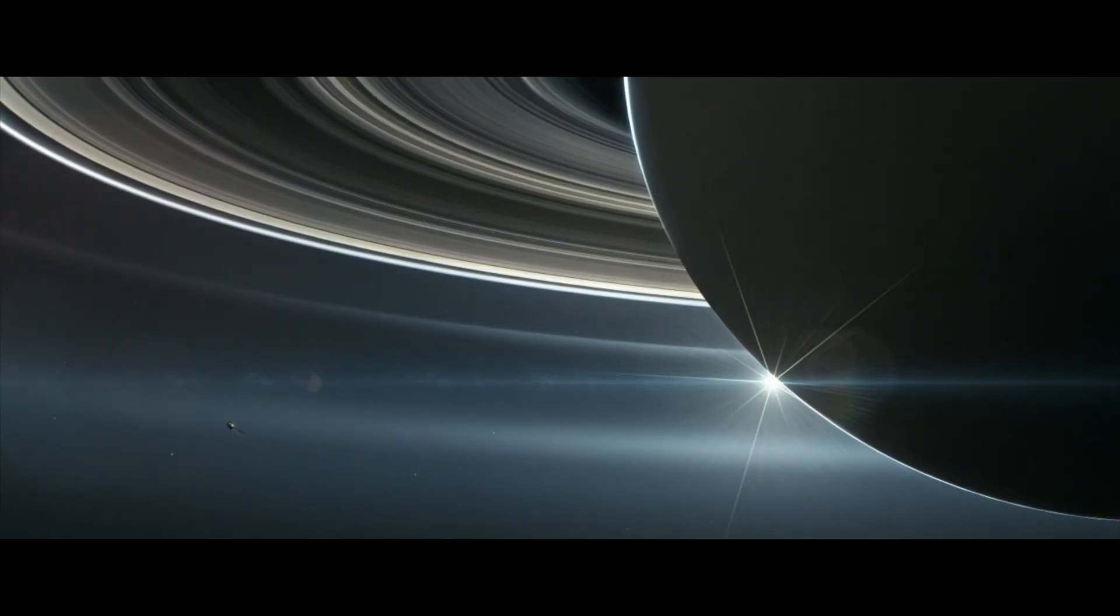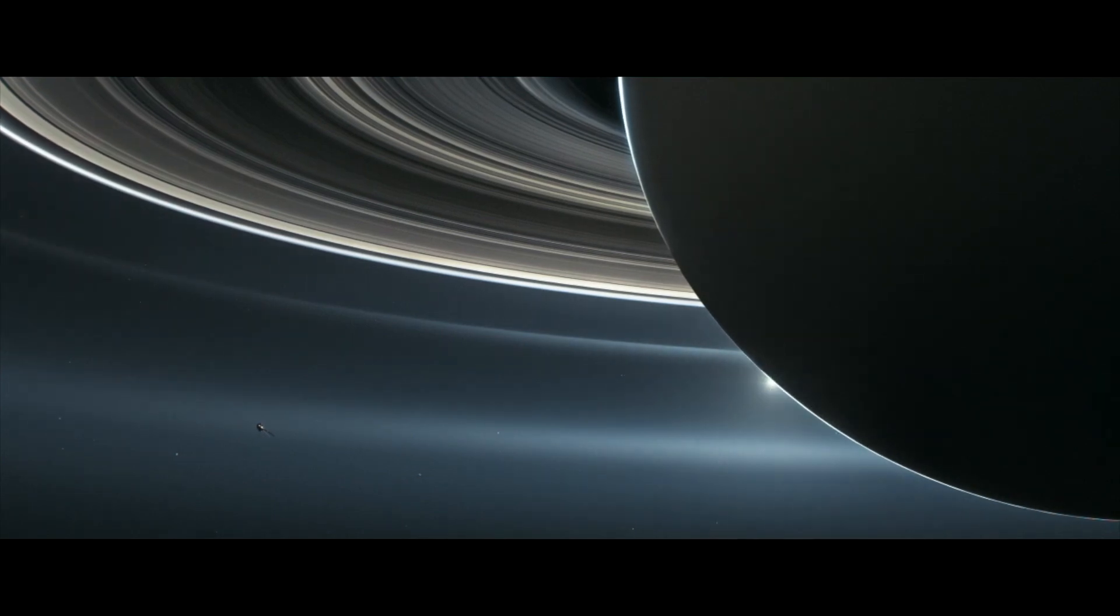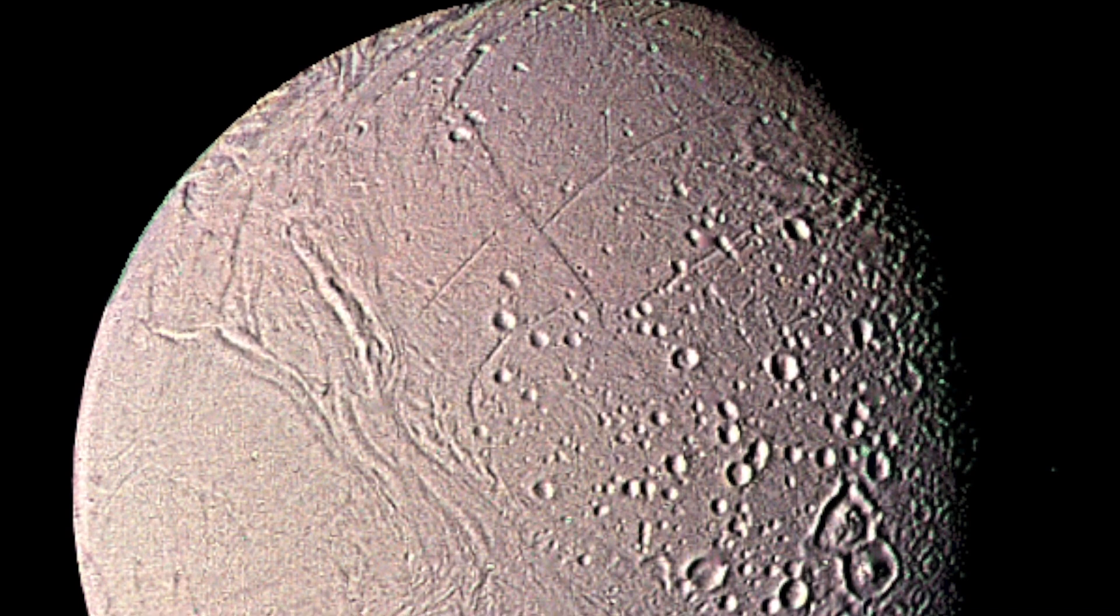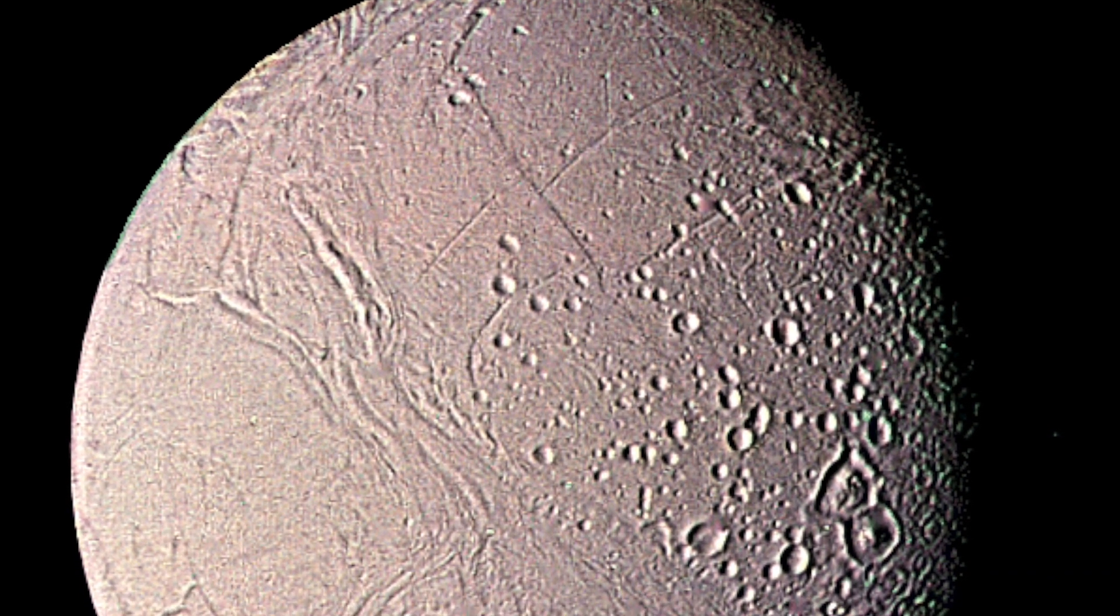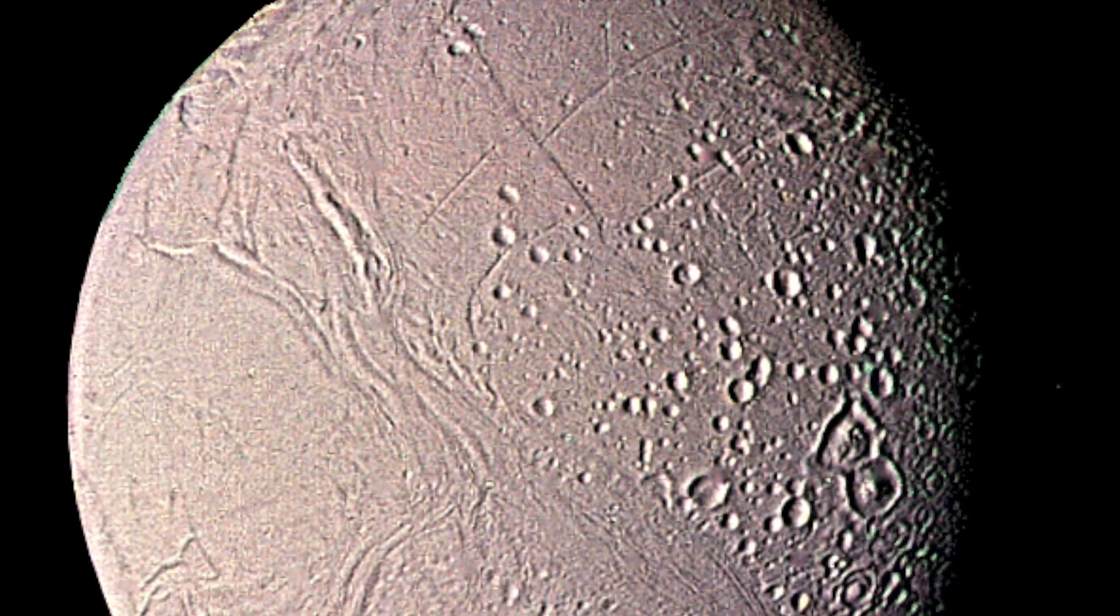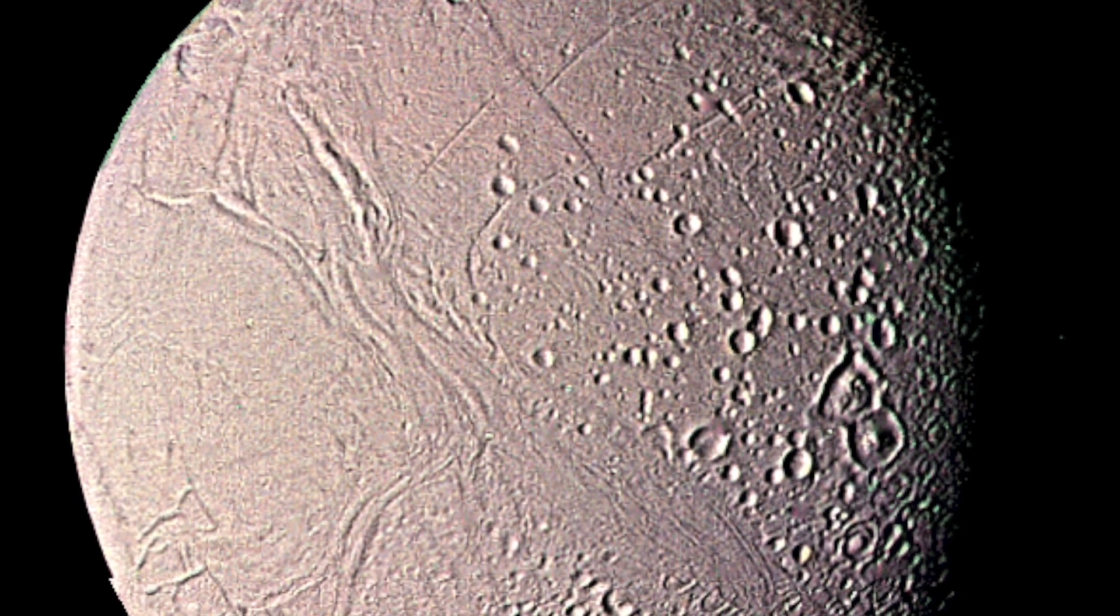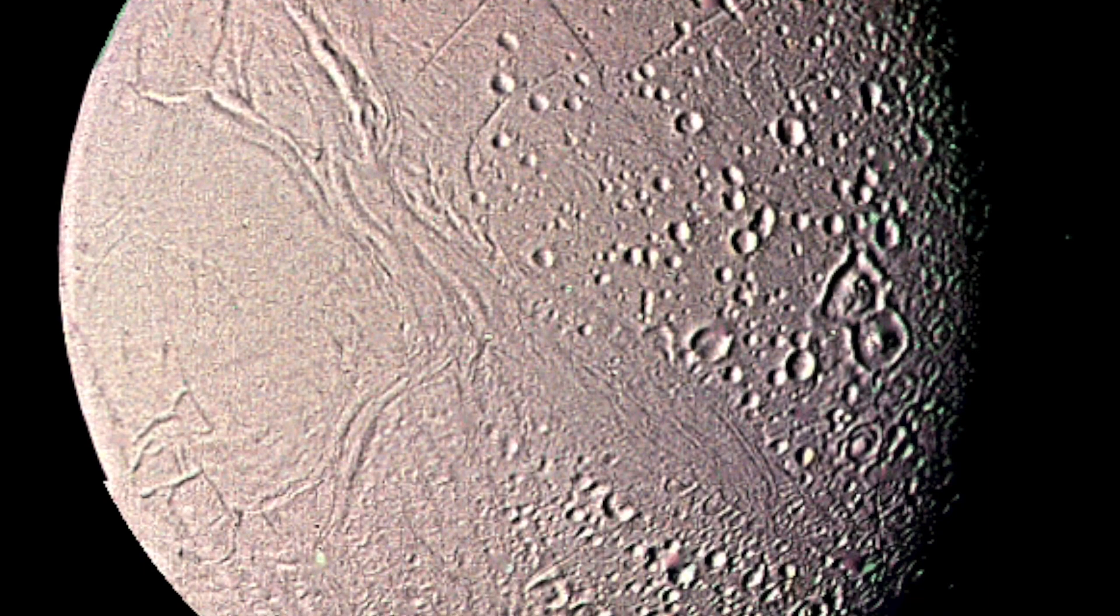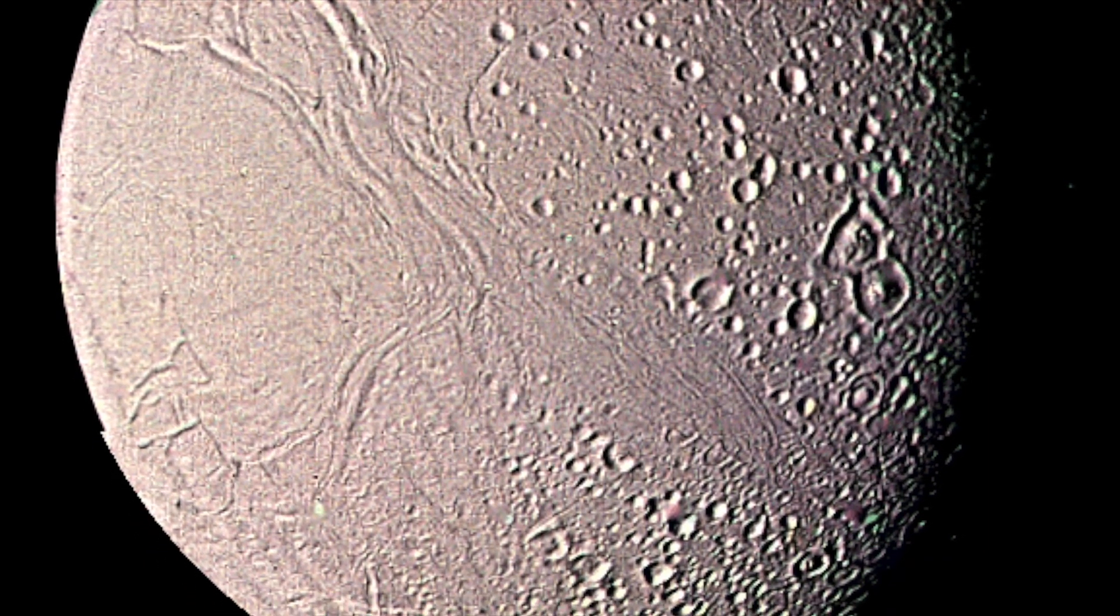But even more important, Enceladus had a liquid water ocean underneath its icy crust, and we think that this ocean might harbor the ingredients for life. Cassini actually had a chance to fly through these jets coming from the south pole of Enceladus seven times, and sample and get the composition of the material. That really leads us to think that perhaps there's really a possibility for an ocean world in this case to have life.